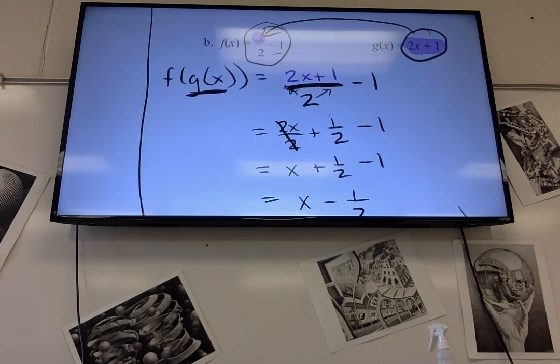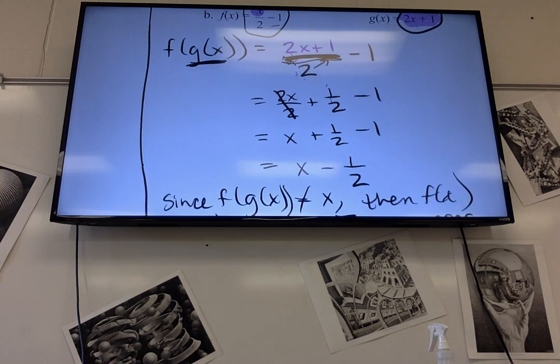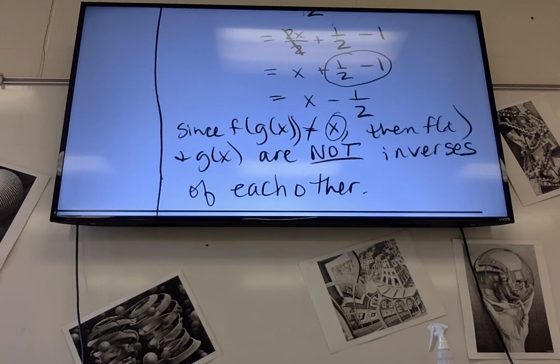Then I simplify. This 2 divided by 2 goes with both the purple 2 and the purple 1. So that's 2x over 2 plus 1 over 2. The 2's will cancel. Good question. And you get x plus 1 half minus 1. And then what has happened before on the inverses is these should cancel. Well, they don't. 1 half minus 1 is negative 1 half. So since everything didn't cancel and I didn't just end up with x, then it's not an inverse. And we're done.